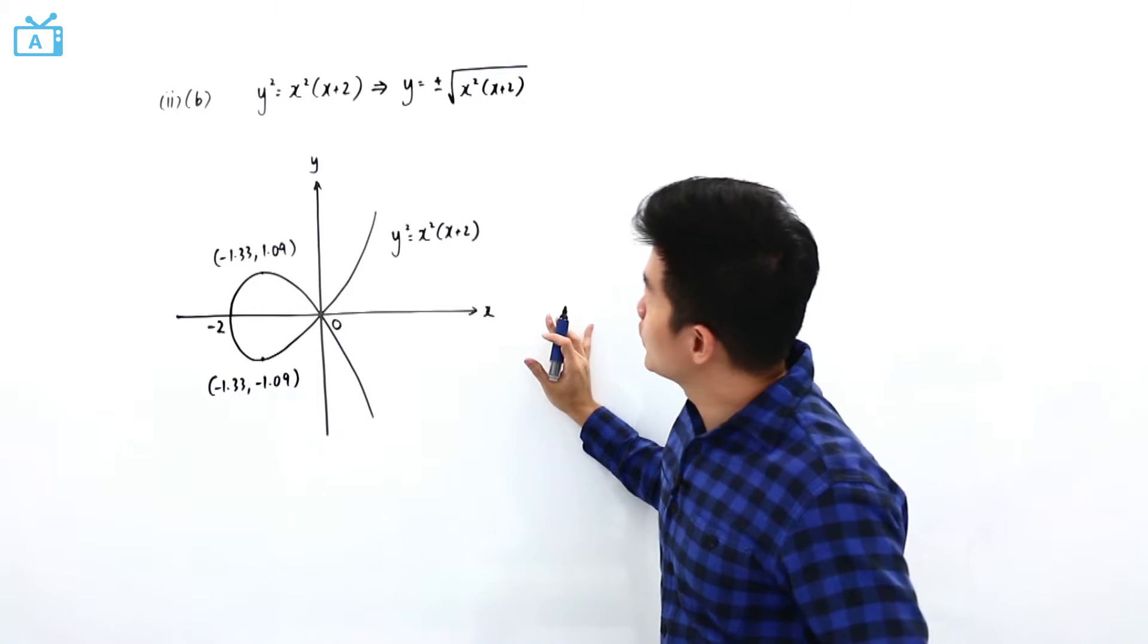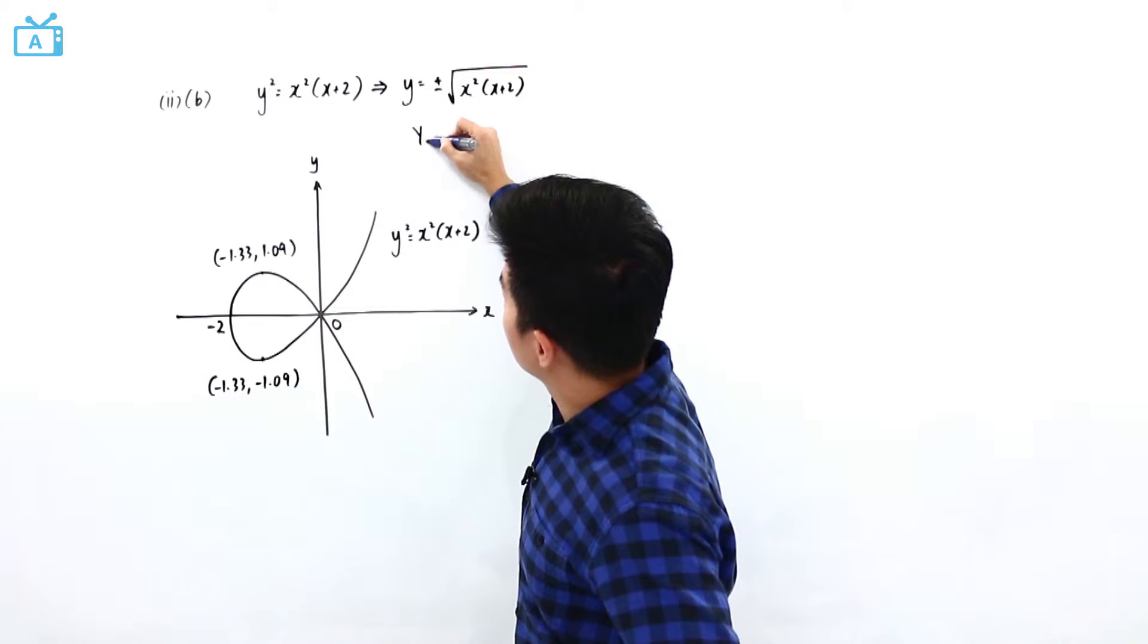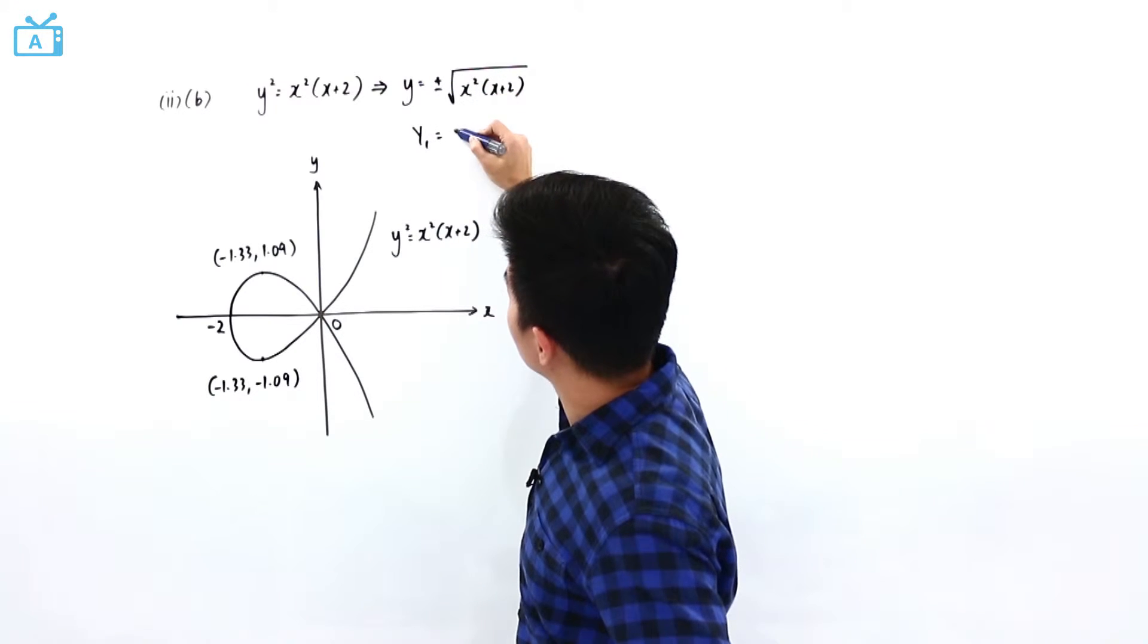You can take a look at the screenshot that is in the solution. That is why in the screenshot, I will have let y1 be equal to the positive.